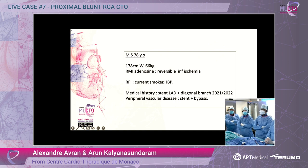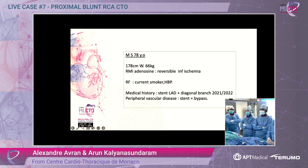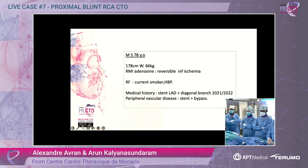Today is one of my favorite patients. It's Mr. S, 78 years old. We have all the medical history with a stent in the LAD two years ago. He is a current smoker. We have chest pain currently. MRI adenosine shows reversible inferior ischemia. He also has peripheral vascular disease with stent and bypass.